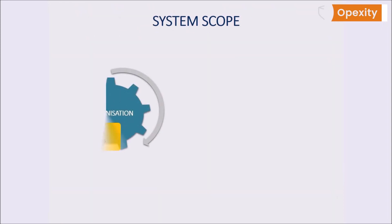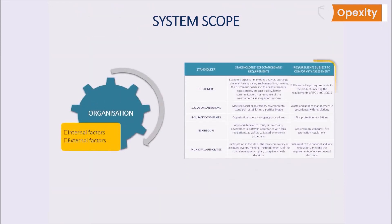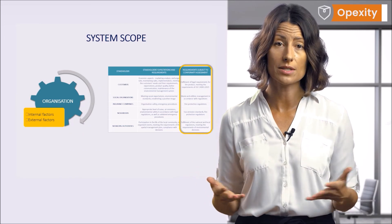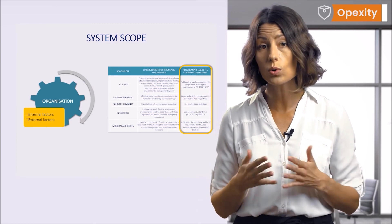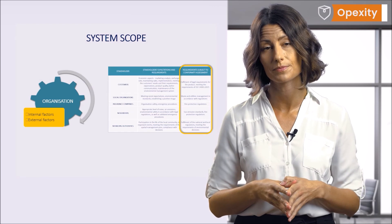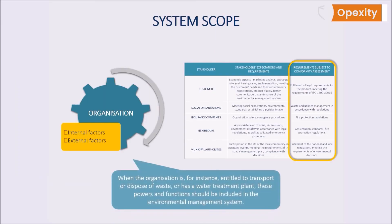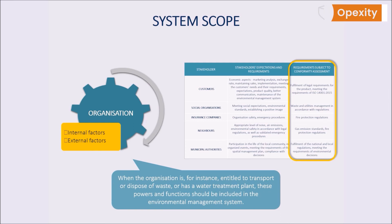Once we have the context of the organization defined and we know the stakeholders and their requirements, we can consider the scope of the environmental management system. When defining the scope, we take into account all internal and external factors identified during the context analysis, the requirements of stakeholders including compliance obligations, our organizational unit needs and functions — all in relation to the products and services of the organization. Remember that when the organization is entitled to transport or dispose of waste, or has a water treatment plant, these powers and functions should be included in the environmental management system.